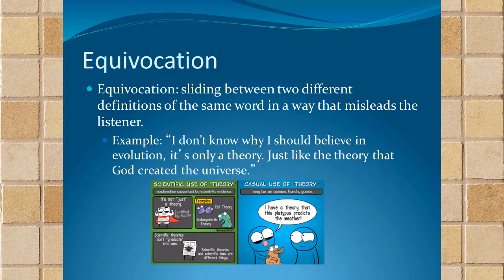I actually saw a friend use this fallacy on Facebook recently. He said something like: as people get more liberal education, they become more politically liberal. There's an equivocation between 'liberal education' — which means a broad education with many perspectives — and 'politically liberal,' which has different meanings depending on the country. A political liberal in Britain has somewhat different values than one in the United States. I think my friend was just having fun starting controversy, but there was a clear sliding of the definition of 'liberal,' which is an example of equivocation.